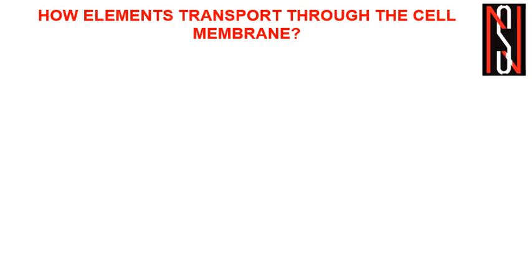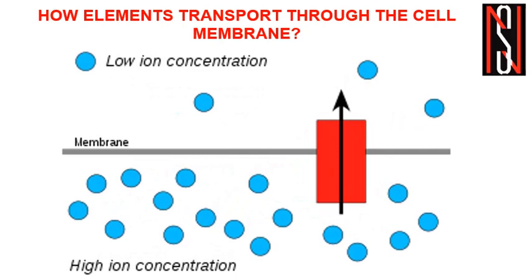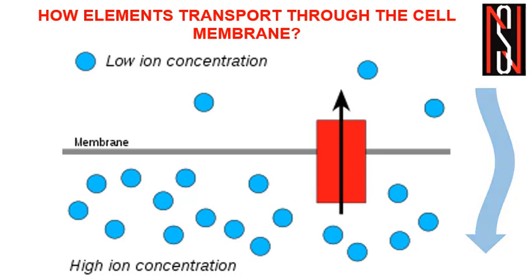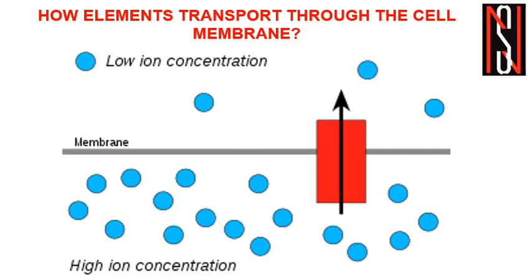First of all, one question should come into our mind: how do elements transport through the cell membrane? Elements in high concentration pass through the biological membrane to low concentration very easily, across the concentration gradient — from high to low concentration — and this is called passive transport. If elements have to go in the opposite direction, from low concentration to high concentration, energy is required because it is not spontaneous, and this is called active transport.